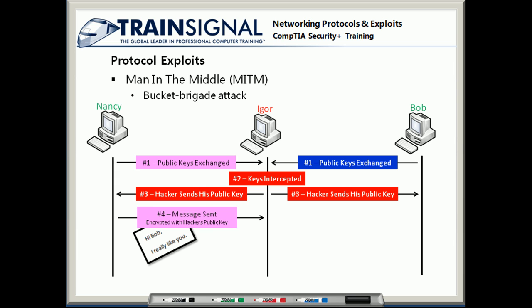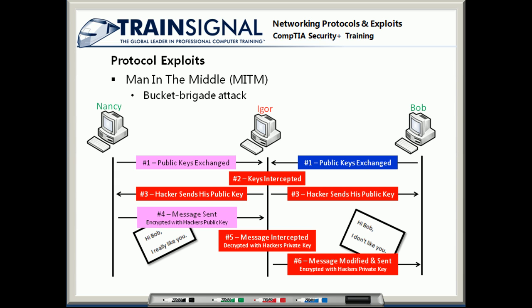Igor is going to decrypt that message with his private key, read it, modify it, and then send that message over to Bob. He's going to encrypt it with his private key, and then Bob can use that public key to decrypt it, thinking it's Nancy's public key.